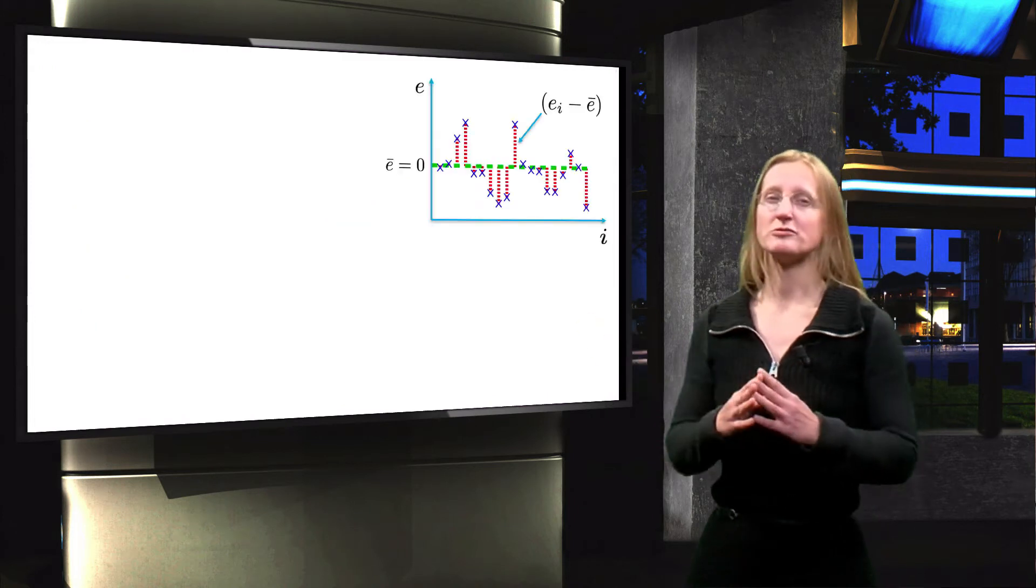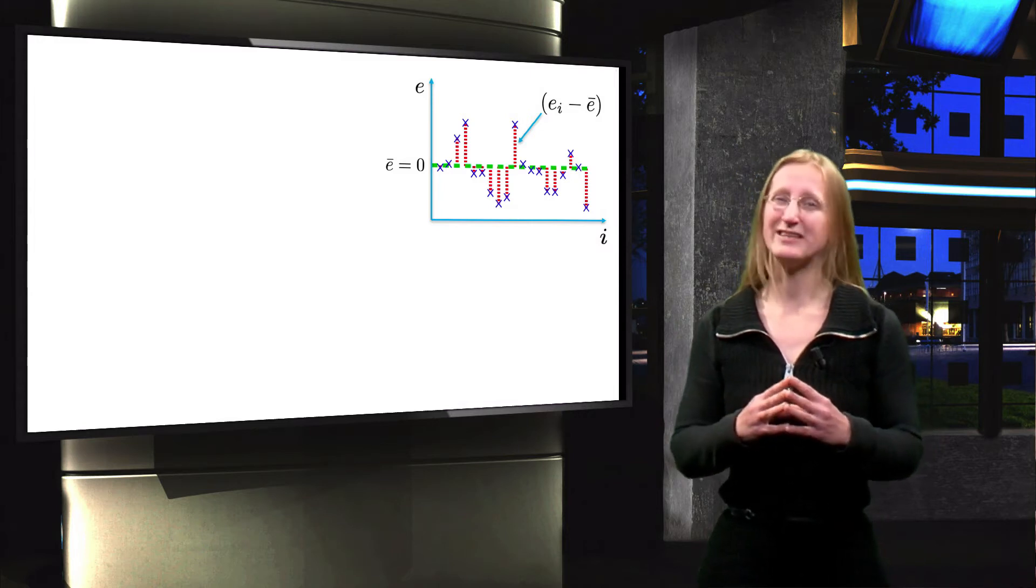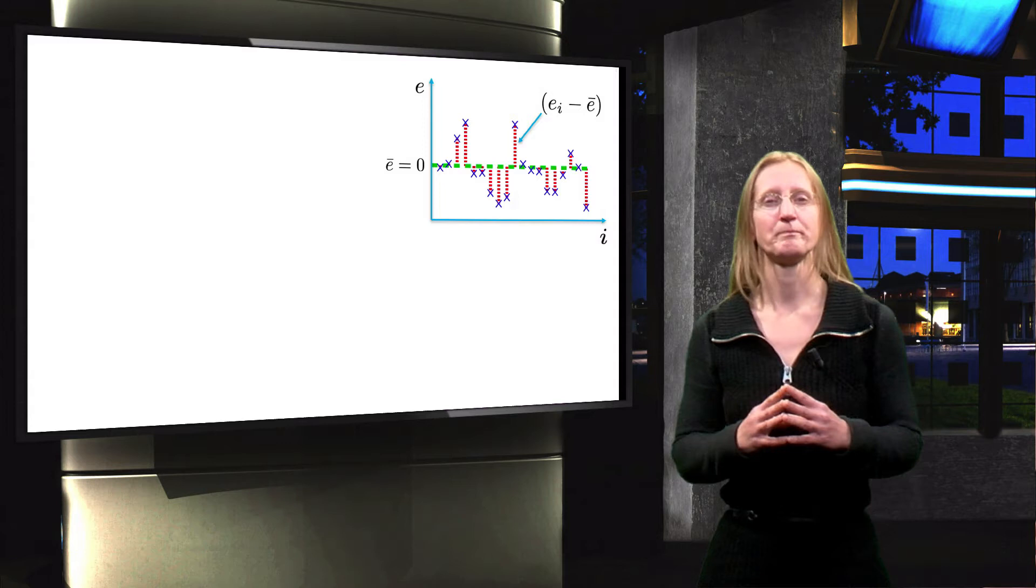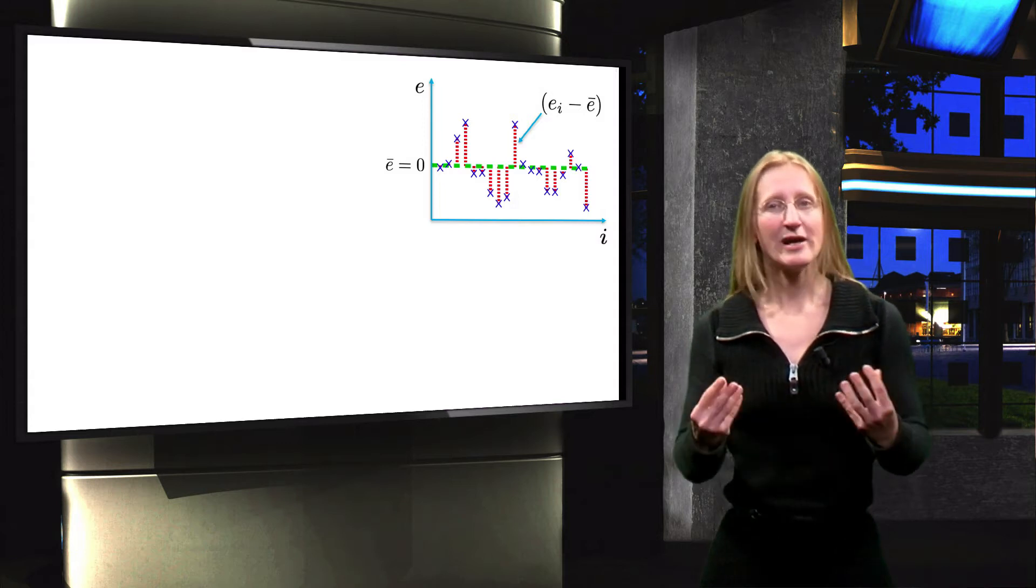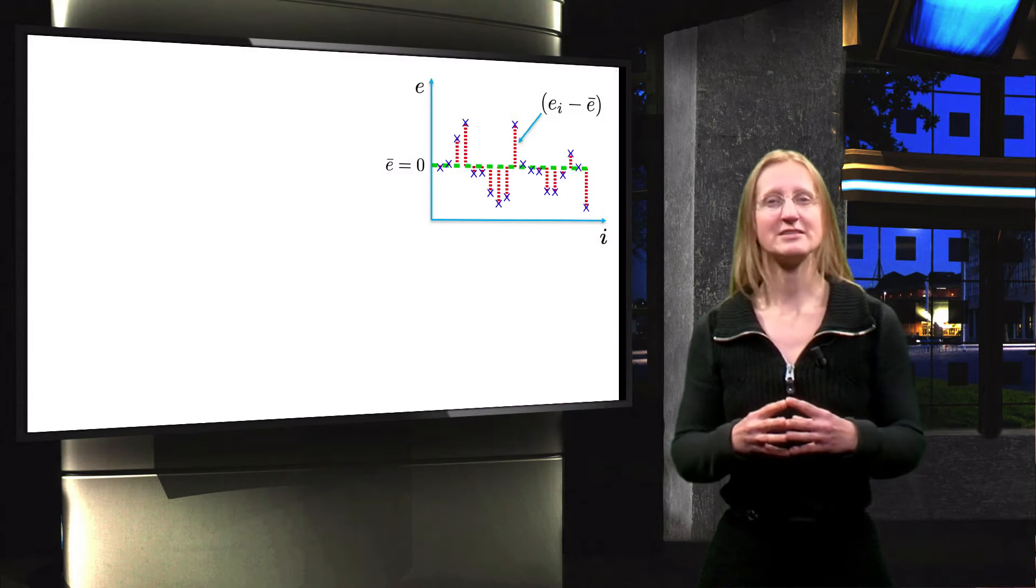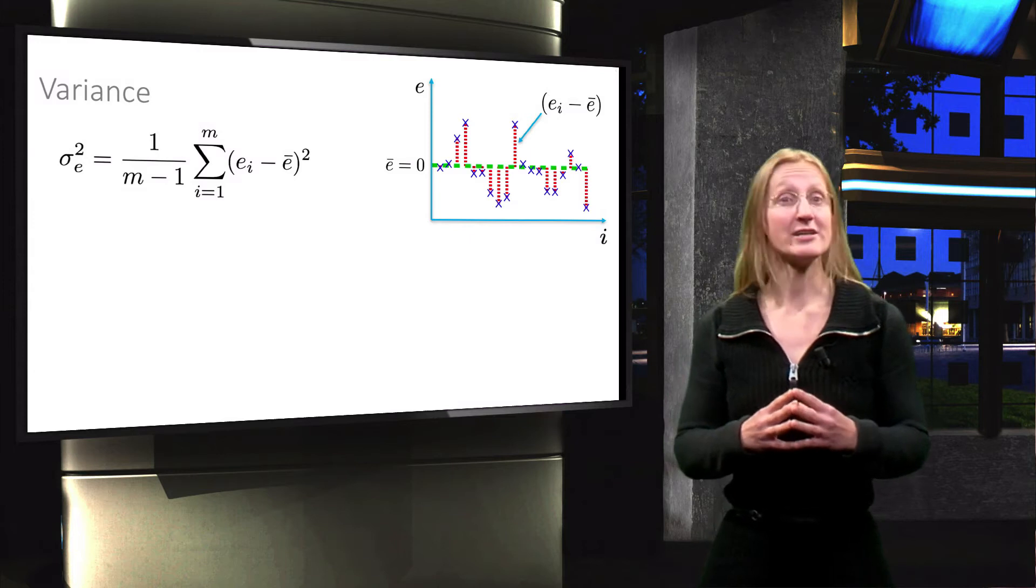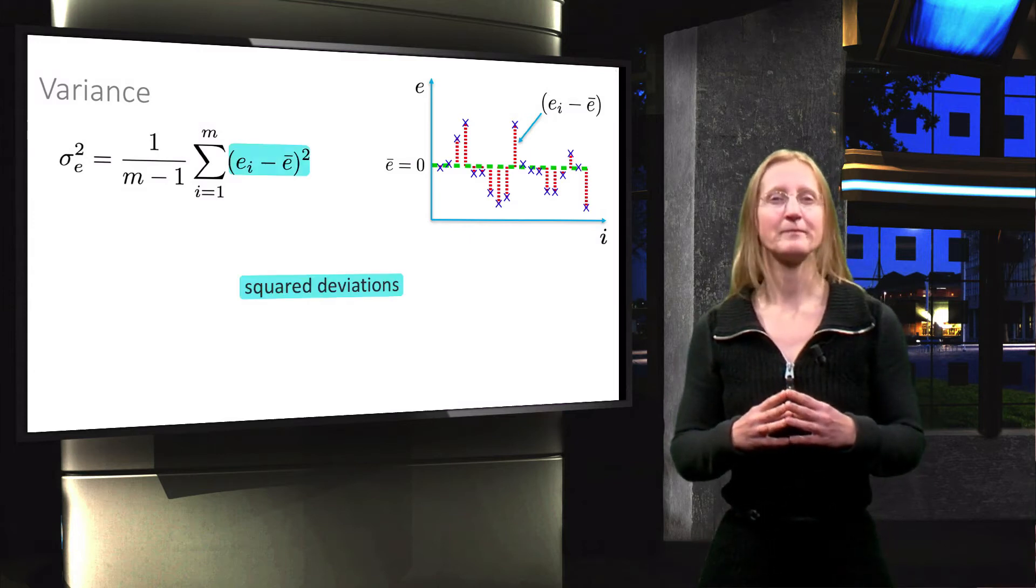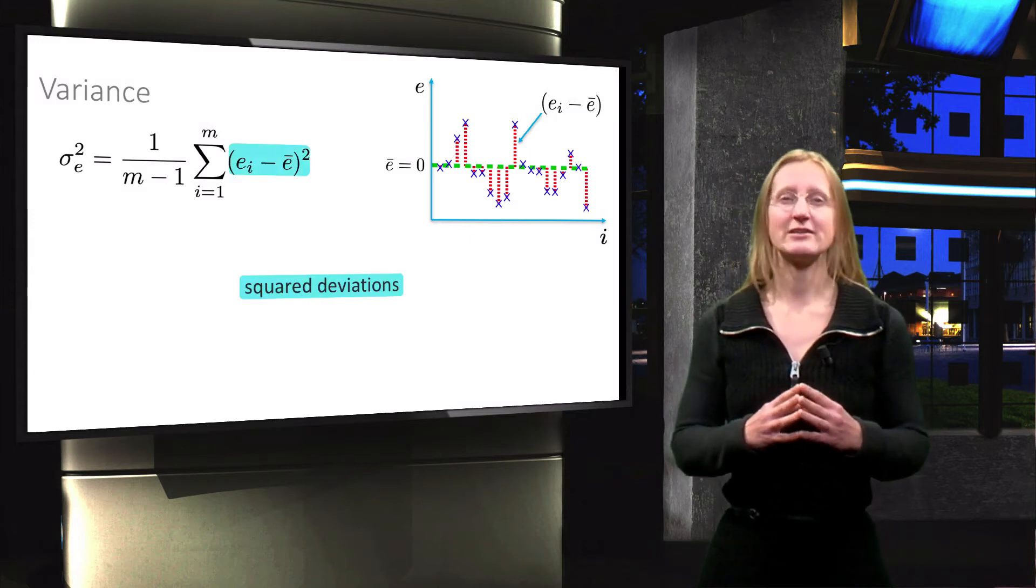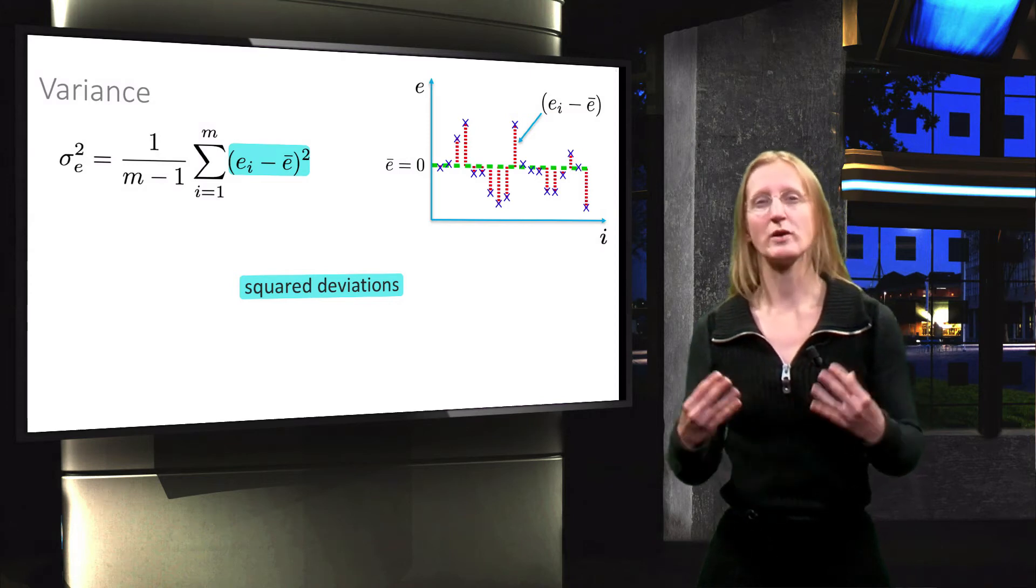This figure shows some realizations of the random errors and the red dotted lines are the deviations from the mean. The square of the standard deviation, which is called the variance, is defined by this equation, where first we recognize the squared deviations from the mean, and we see that the variance is approximately equal to the average of these squared deviations.